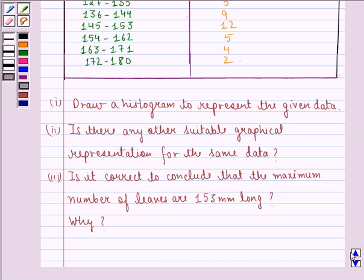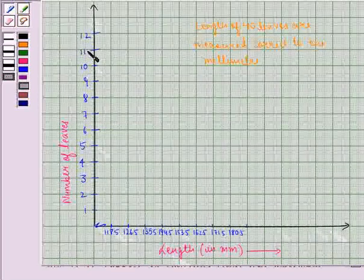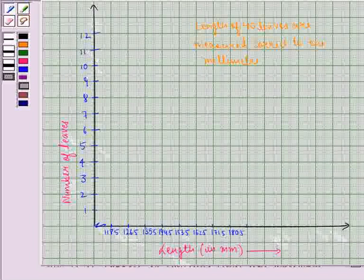Let us see the solution to this one. First of all we will draw a histogram. On the x-axis we take the length, y-axis we take number of leaves. Now we can draw here a histogram. So we see now that this is the required histogram.